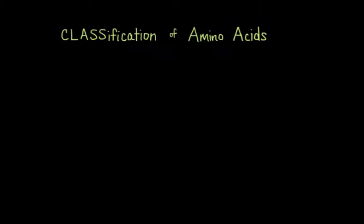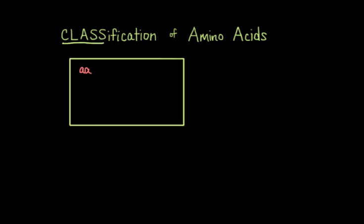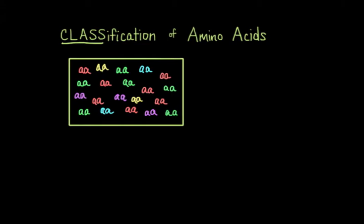All right, so let's go through the classification of amino acids. I've highlighted the word class within classification for you because I'm going to paint for you a picture of a classroom that is full of 20 different amino acids. Picture this is the most diverse classroom you've ever seen because each amino acid has their own unique side chain.